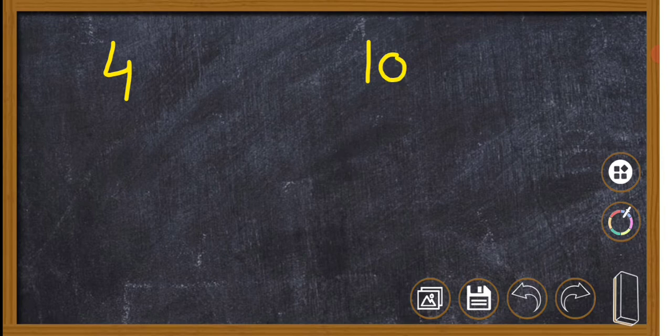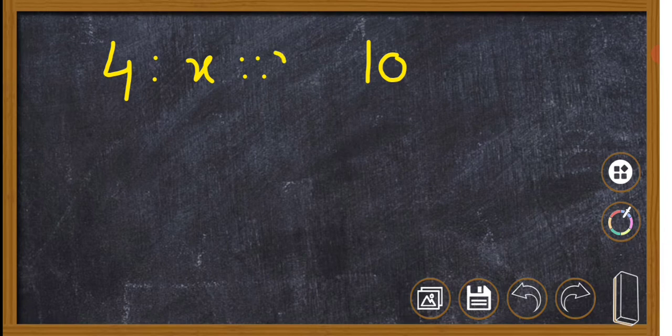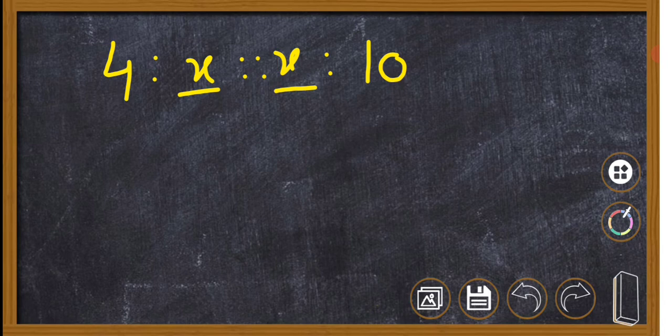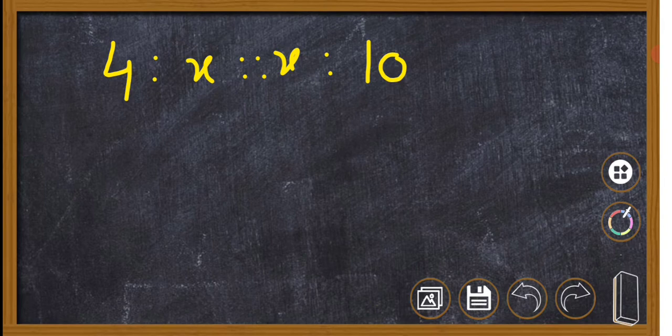We use 4. The mean proportion is when we use 4 numbers, we use an x to find the mean proportion.